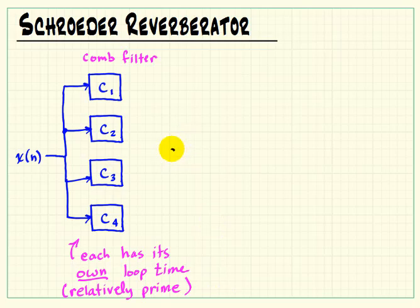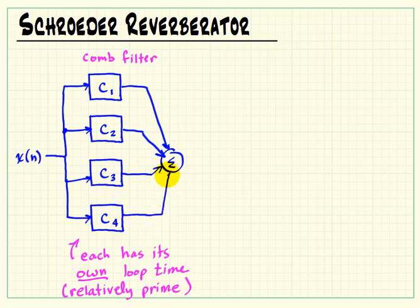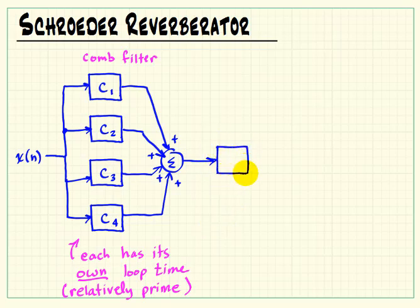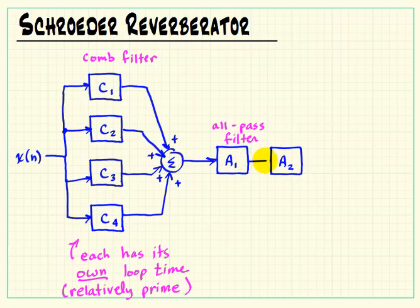If all the loop times were an integer multiple of each other, then most of the impulses would end up overlapping. So each comb filter looks at the input signal and generates its own response, and these are all added together. At this point things are looking pretty good, but we can get even higher pulse density by passing the output of the combined comb filters through a couple of all-pass filters. In this design, we have two all-pass filters operating in cascade, or series connection, and our finished output is taken at the output of the all-pass filter.